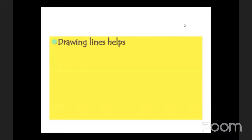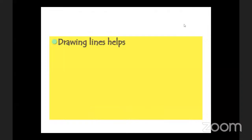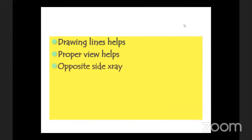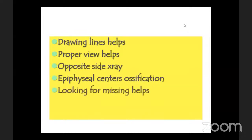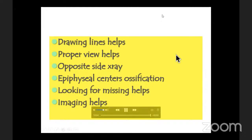Summary of tips for diagnosing elbow fractures in children: drawing lines helps — anterior humeral line, radiocapitellar line, and Mubarak's line. Also assess fat pads. Proper views help: internal rotation view for lateral condyle fracture, axial view for medial epicondyle fracture. Opposite side x-rays help especially in medial epicondyle injury. Knowledge of epiphyseal center ossification helps. Look for missing parts, especially medial epicondyle. If you have a normal-looking x-ray with significant injury in a child, advanced imaging — MRI, CT, or arthrogram — helps.